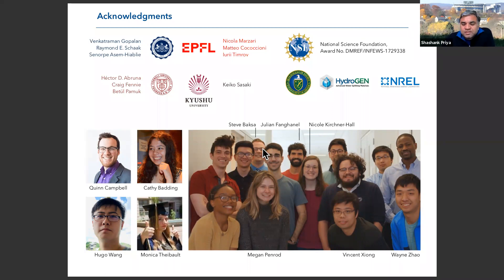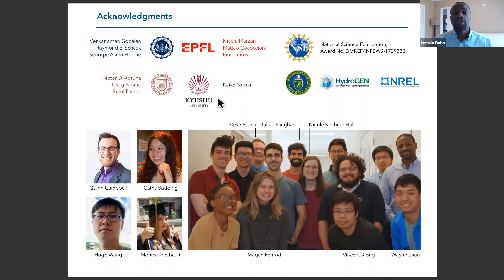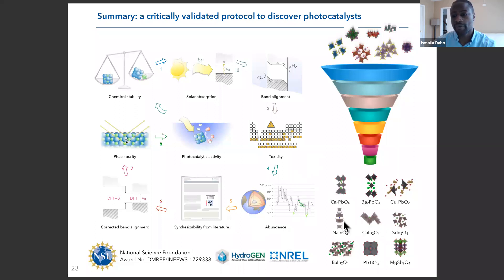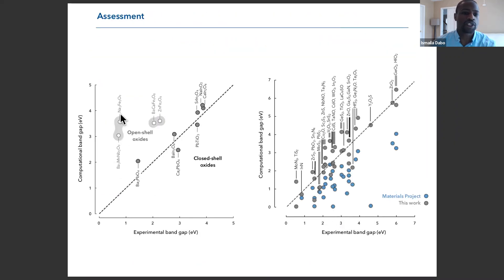Audience question on photocatalyst reusability: how long does the catalyst last and how do you determine reusability over multiple cycles? The speaker answers: after the photocatalytic test, they perform a second XRD measurement to determine if the sample retains the same diffraction pattern. For most samples run under standard pH conditions, they are stable. The iron ferrite compound was the most stable, remaining stable even under acidic conditions. Others tend to degrade under acidic conditions. Checking stability by Pourbaix diagram and experimental validation is another screening step they plan to add.